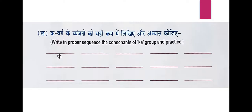Here you have to write K to G — all the letters in order. K varg ke vyanjanon ko sahi kram mein likhiye aur abhyas kejye. Write the consonants of the K group in proper sequence and practice. The letters are: K, K, G, G, Nga.